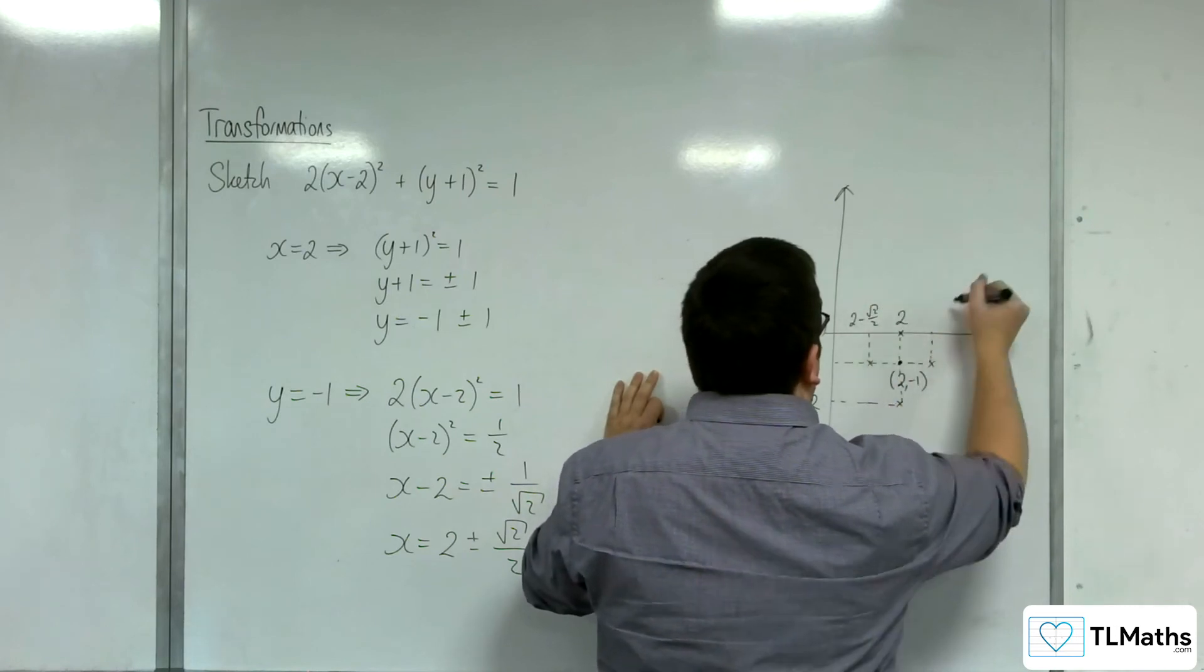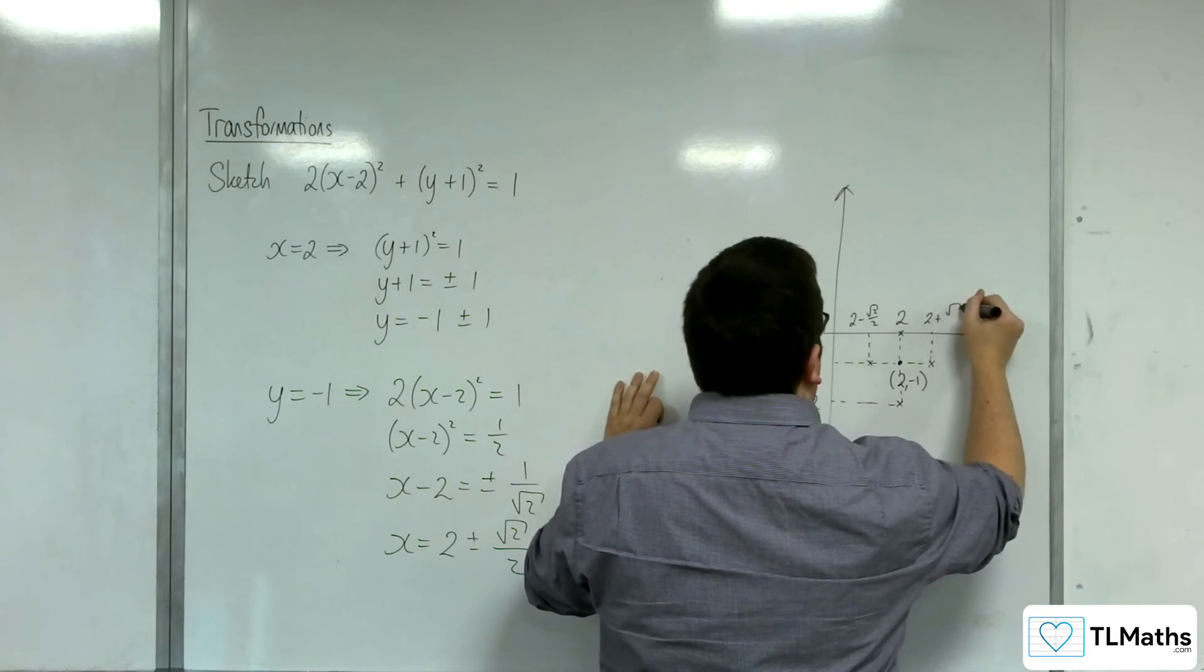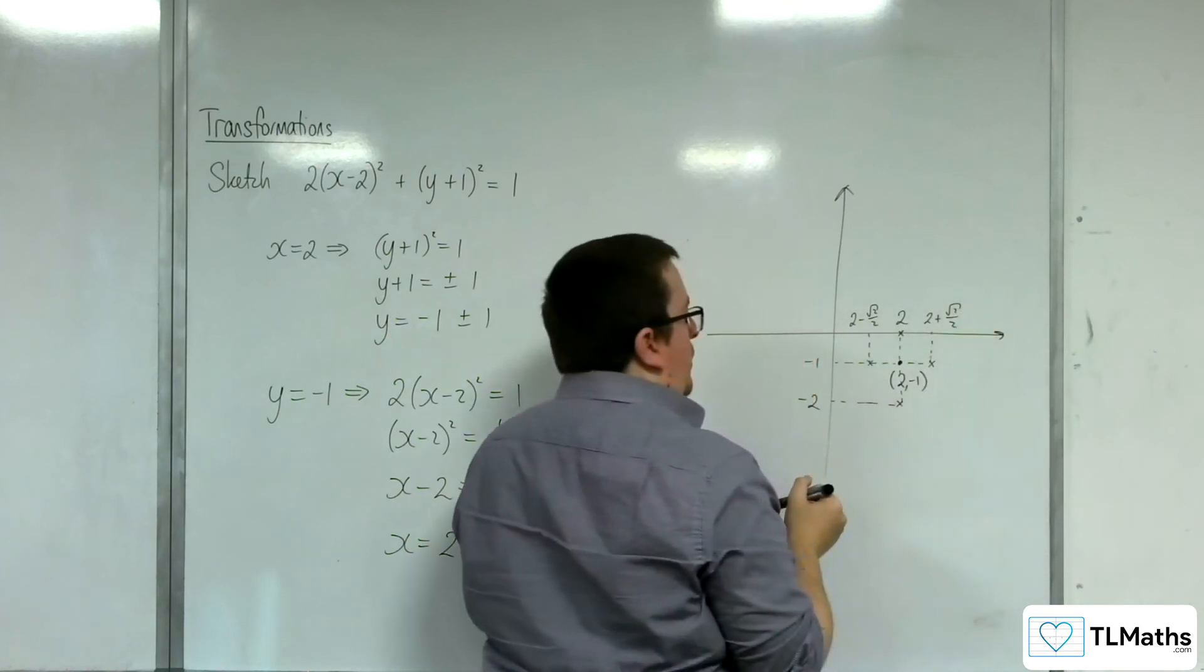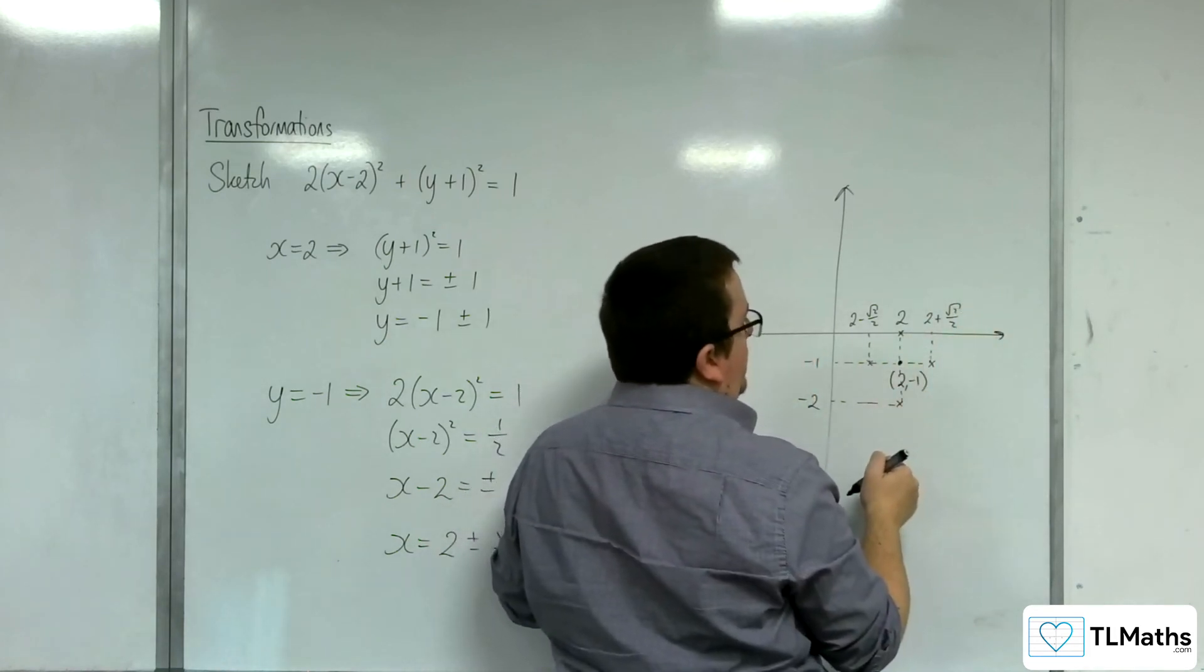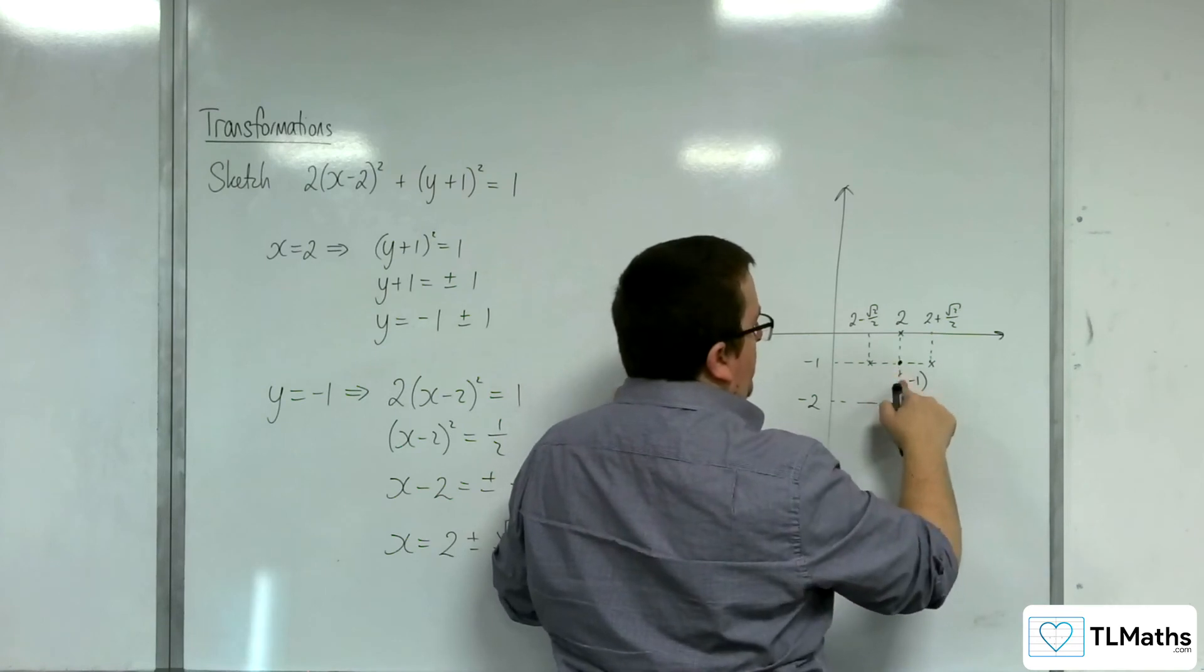And this point is at 2 + √2/2. So my graph's got a lot of construction lines on it at the moment. Let me just get rid of that.